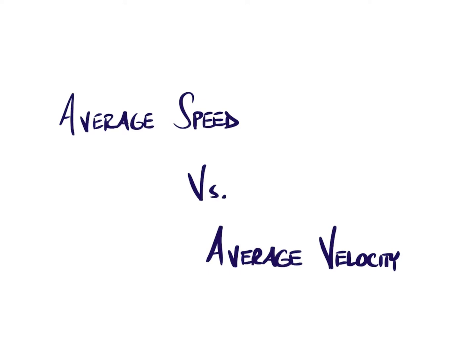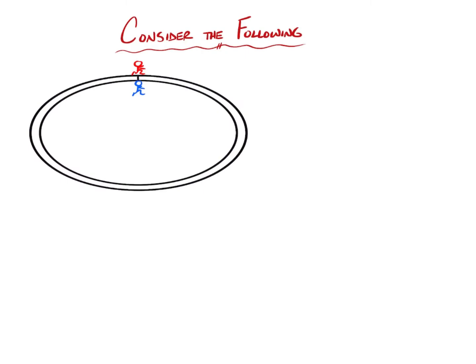To understand the difference between average speed and average velocity, which to most people sound like exactly the same thing, we'll take another look at the example with our red and blue runners running around a circular track.